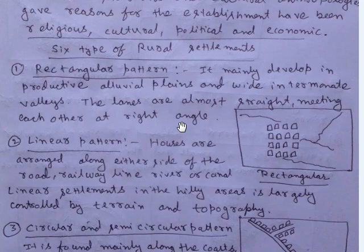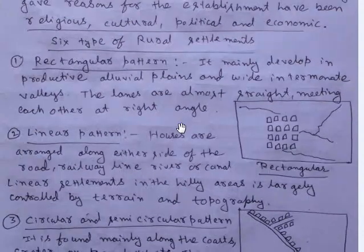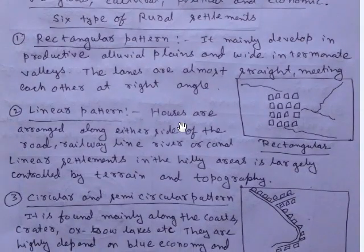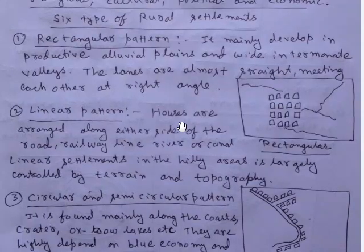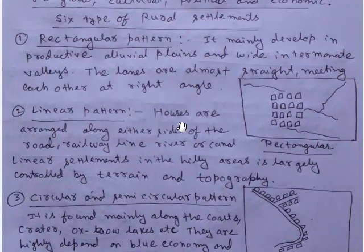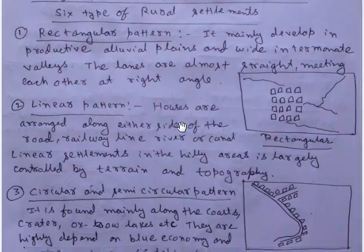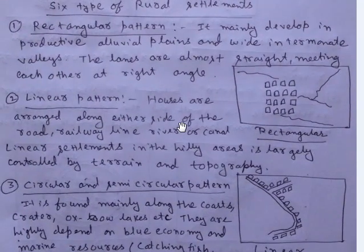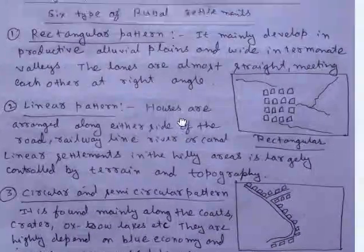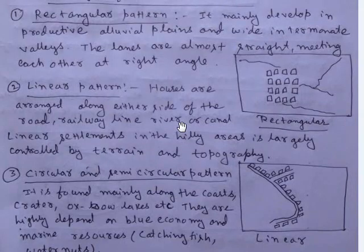The first is the rectangular pattern. It mainly develops in productive alluvial plains. The lanes are almost straight, meeting each other at right angles.